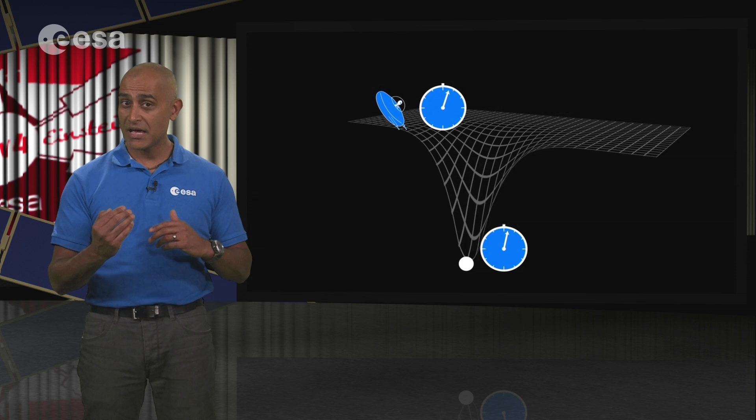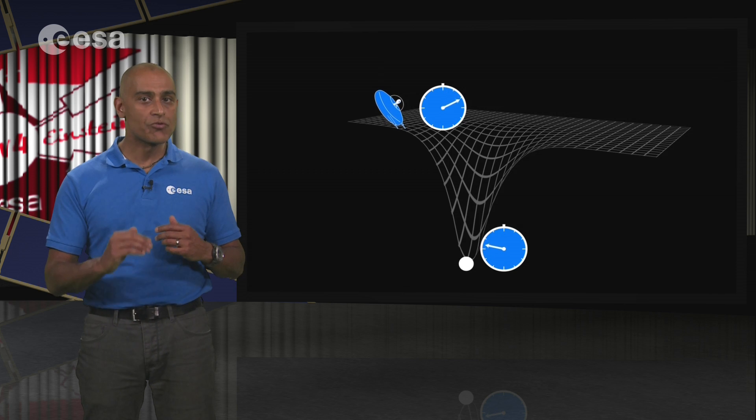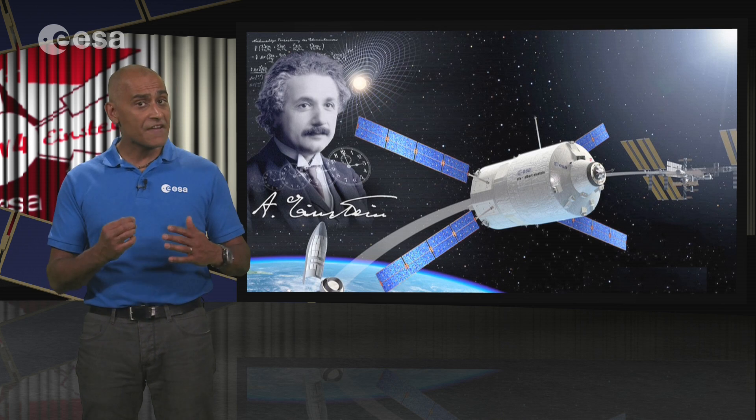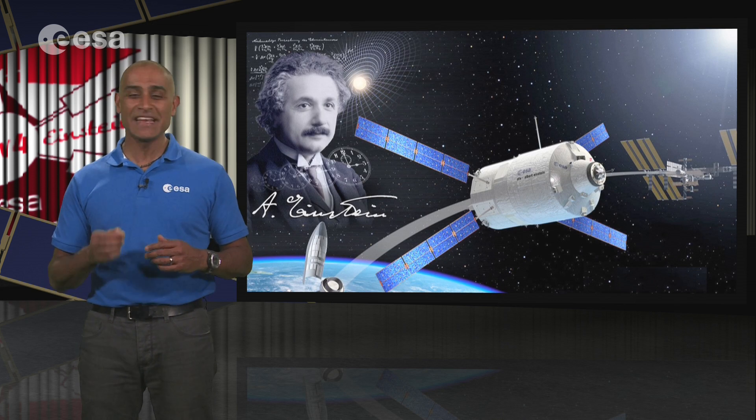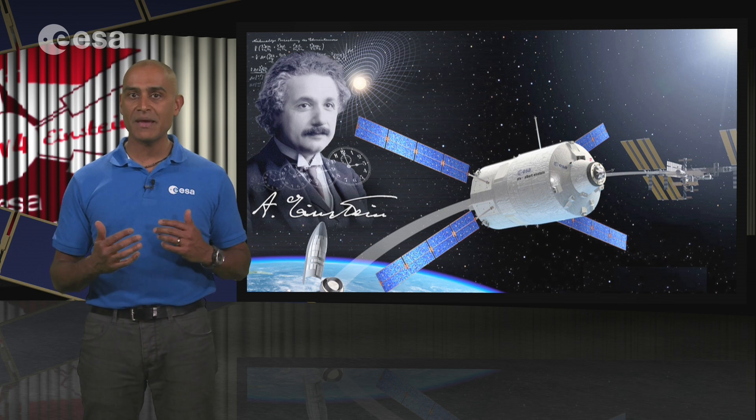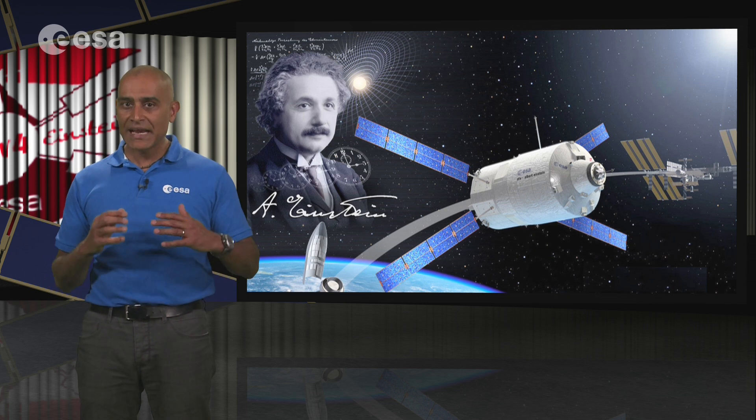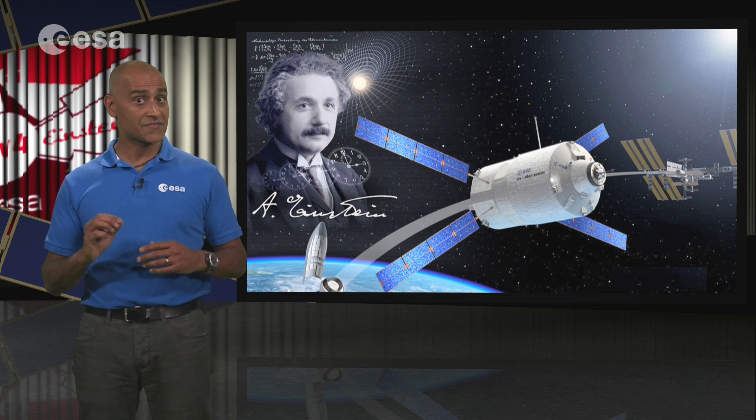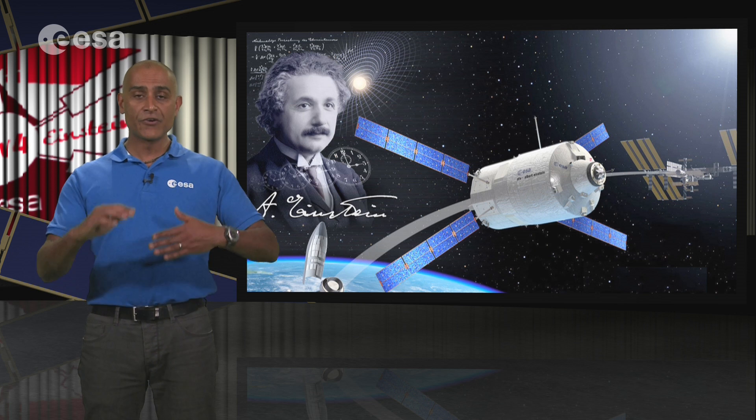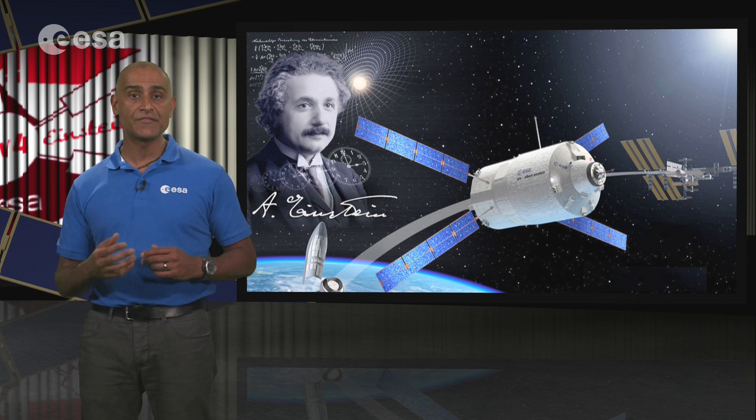Clocks, and therefore time, run slower the deeper you are in a gravity field. An effect predicted by Einstein in 1916 and finally confirmed experimentally in 1959 by Robert Pound and Glenn Rebke, who successfully measured this effect over a vertical height difference of 23 meters at Harvard University.